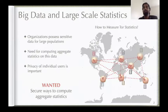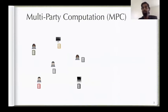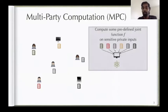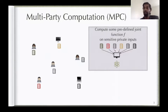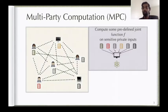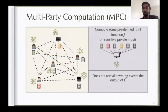An obvious option that comes to mind is: why not use multi-party computation? Multi-party computation is a protocol wherein separate parties each have some sensitive confidential data they don't want to share. But they still want to compute some predefined function on these sensitive inputs. What an MPC protocol allows is that after running the protocol, the parties are able to learn the output of the function without revealing anything except the output — the individual parties' inputs are hidden.